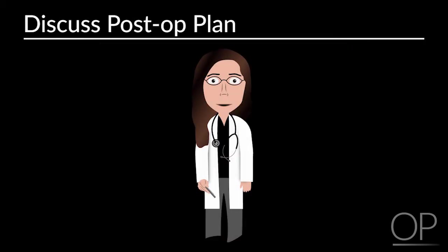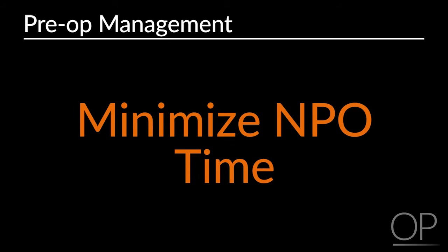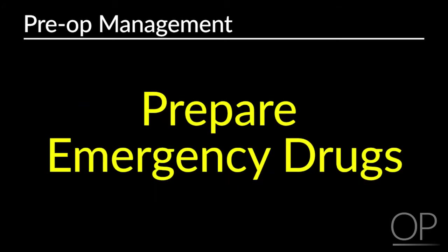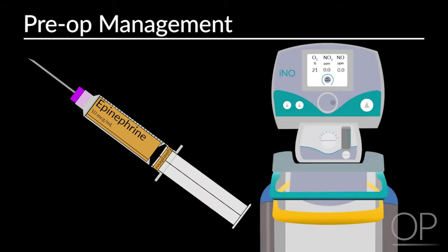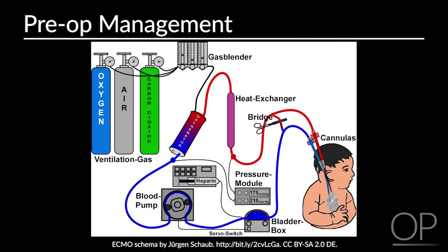It is important to discuss the post-op plan with the patient's cardiologist or an ICU physician. In these patients, minimize NPO times, avoiding dehydration and decreased preload during the pre-op time. It is also very important to prepare emergency drugs before the patient even enters the operating room, including inotropes such as epinephrine, inhaled nitric oxide available in the operating room, and to consider ECMO on standby depending on the severity of the patient.